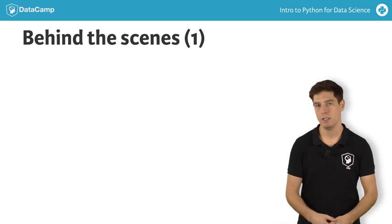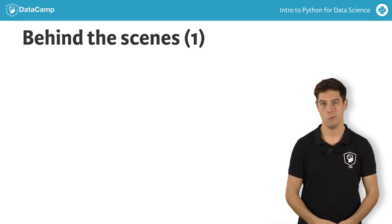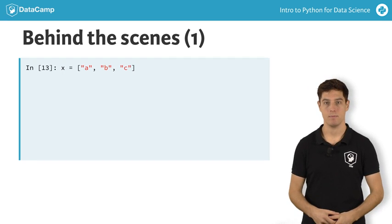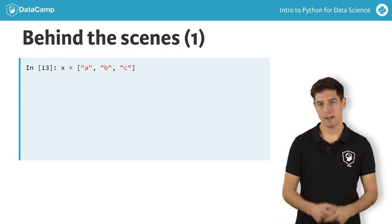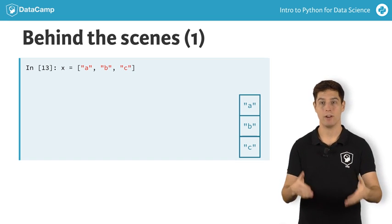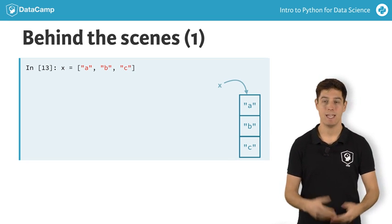Understanding how Python lists actually work behind the scenes becomes pretty important now. What actually happens when you create a new list, x, like this? Well, in a simplified sense, you're storing a list in your computer memory, and store the address of that list, so where the list is in your computer memory, in x.